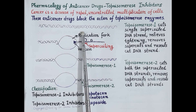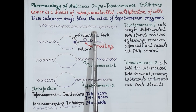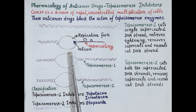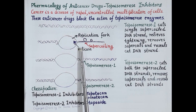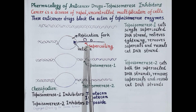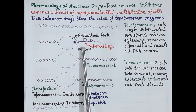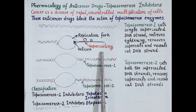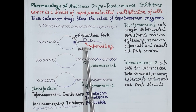DNA is made up of two strands, and one strand is wrapped around the other forming a double helix shape. It is essential for these two strands to separate for DNA replication. An enzyme called helicase pulls the two strands apart, resulting in the formation of a replication fork. As this replication fork moves forward, unwinding of the double-stranded DNA creates tightening, overwinding, and twisting of the DNA segment in front of the replication fork — known as supercoiling. This makes the replication fork unable to move forward and further separate the two DNA strands.